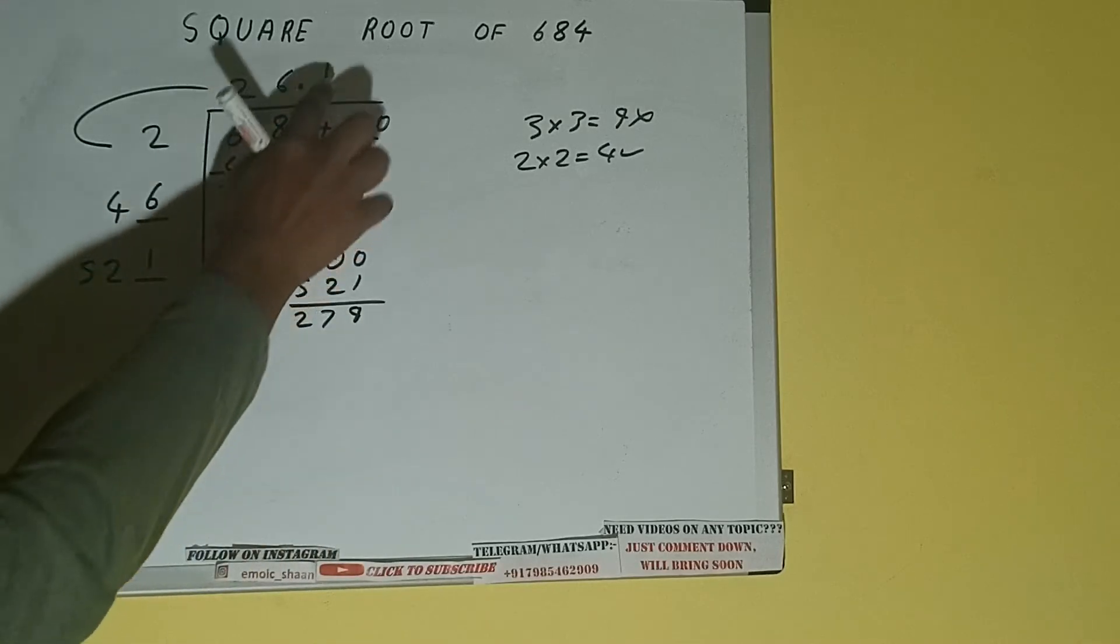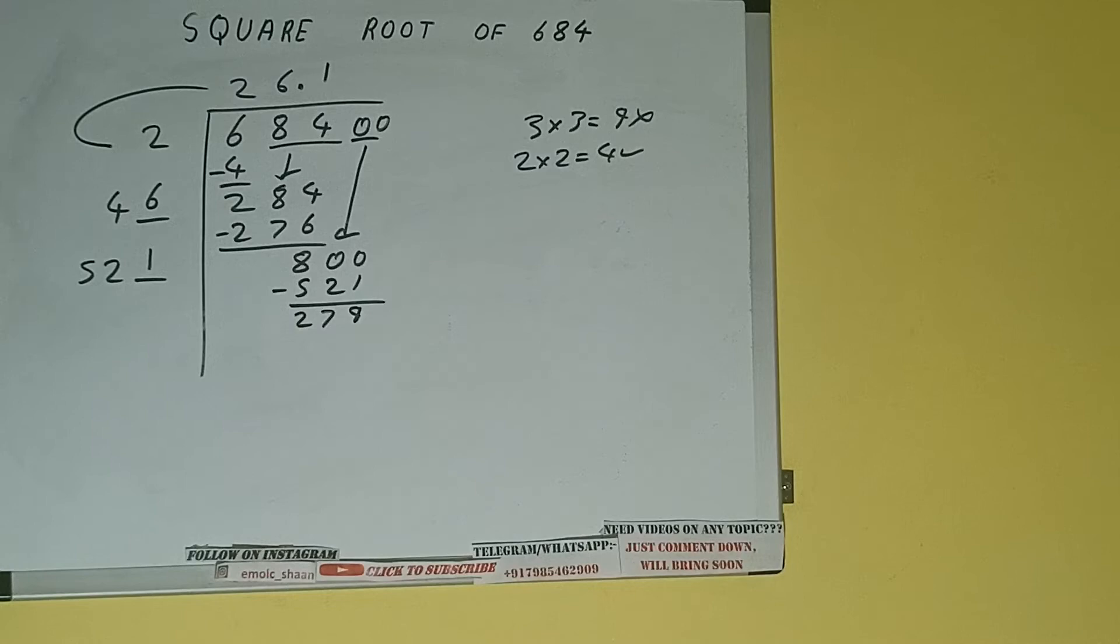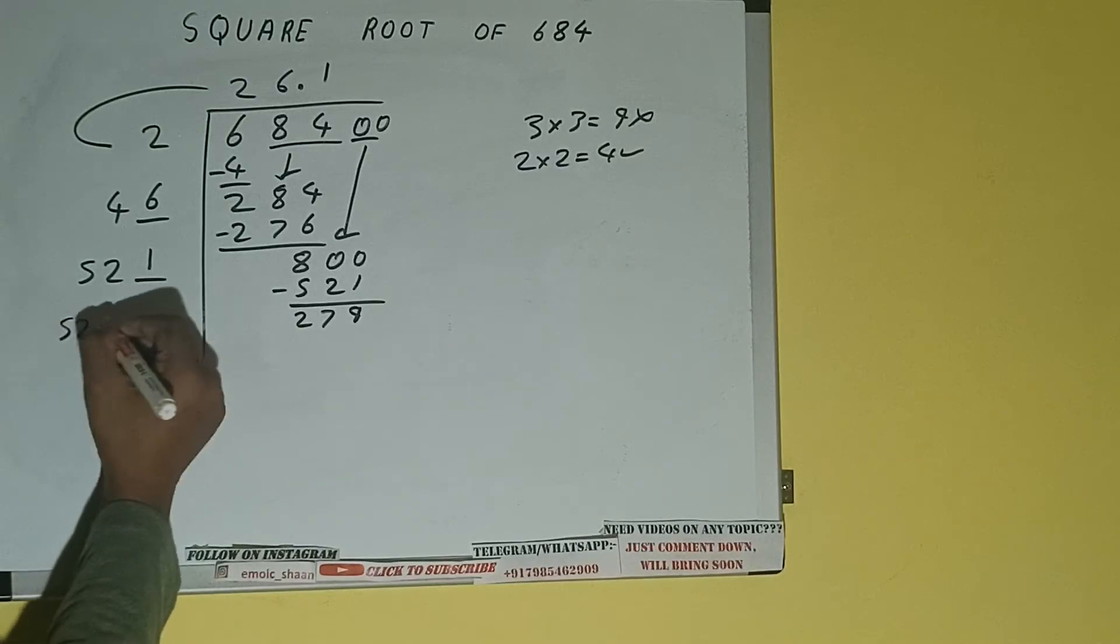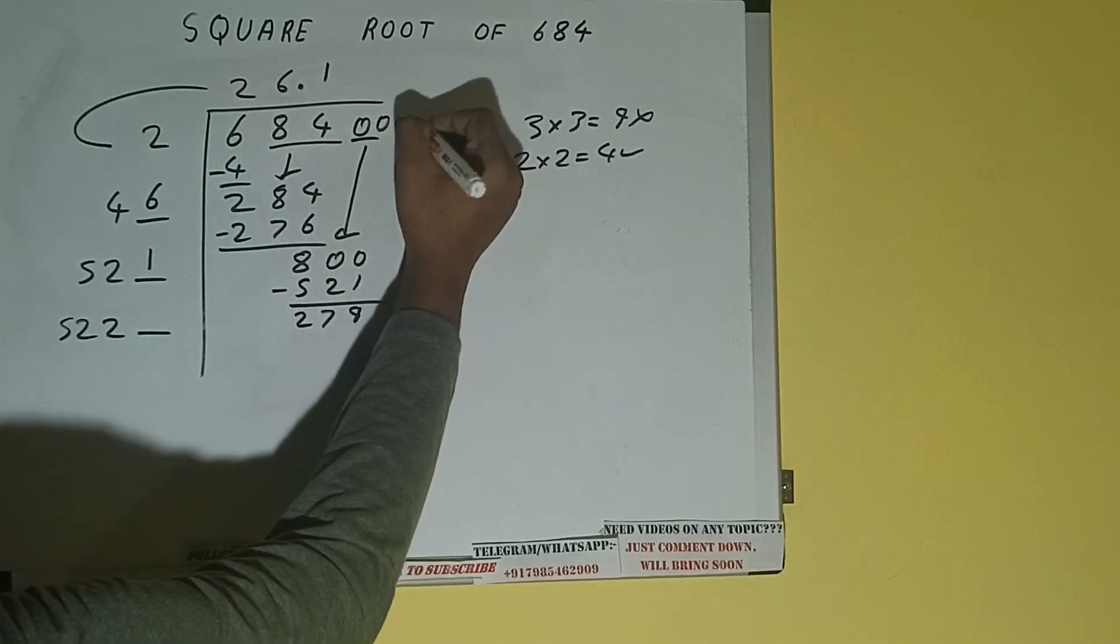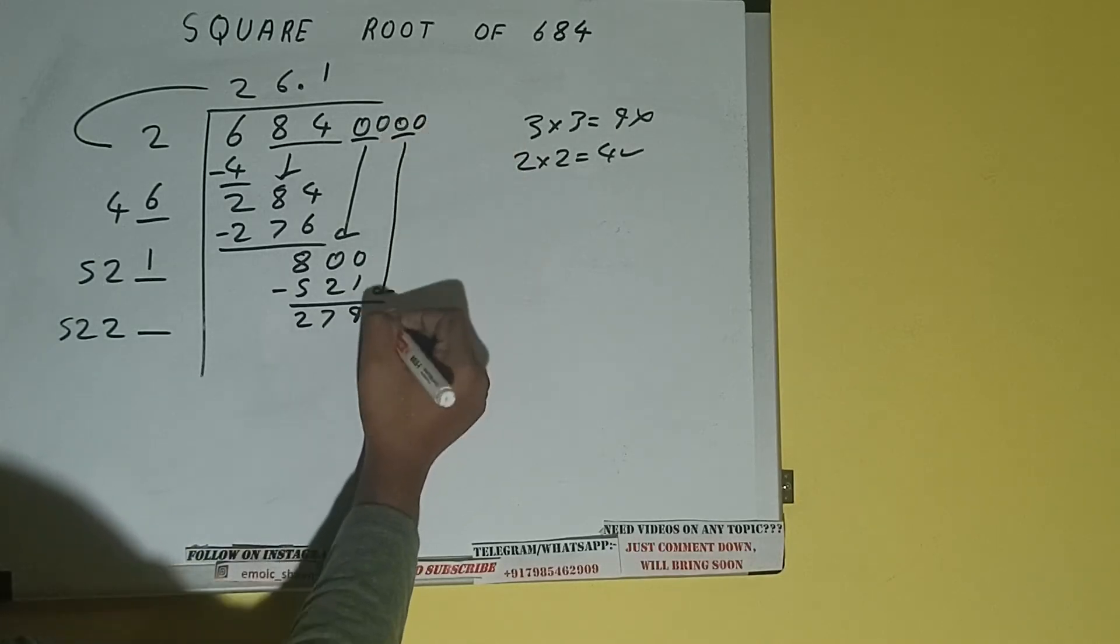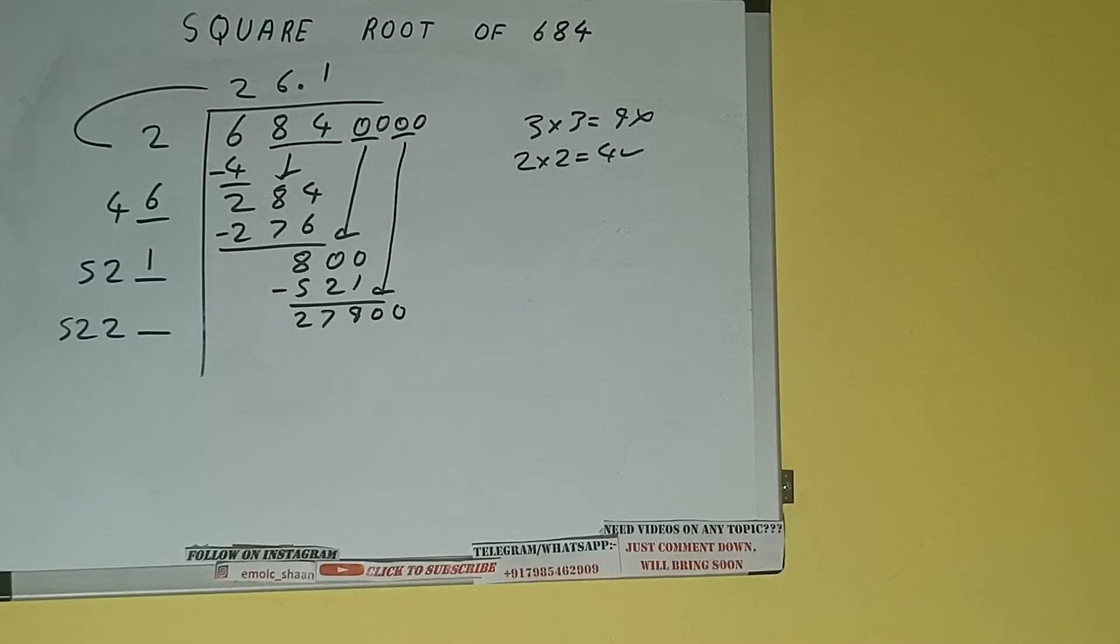Now 521 into 1 we did, so add both. So 521 plus 1 will be 522, and 1 digit extra. And this number we need to make it big. So bring the next pair of zeros down, and it will be 27,900.